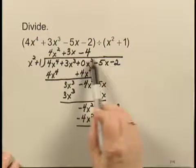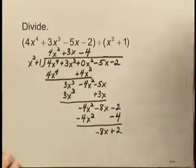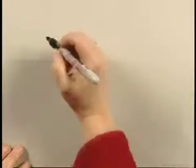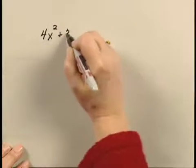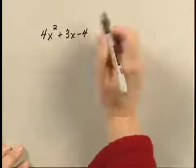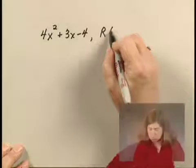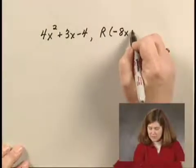My answer will be the quotient with this as a remainder, which I can write as 4x^2 + 3x - 4, with a remainder of -8x + 2.